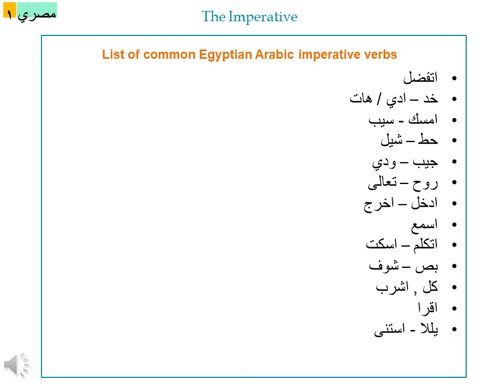Here is a list of common Egyptian Arabic imperative verbs: اتفضل means 'here you are' or 'please'; خد means 'take'; ادي means 'give'; هات also means 'give'; امسك means 'hold' or 'catch'; سيب means 'let'; حط means 'put'; شيل means 'take' or 'remove'; جيب means 'bring'; ودي means 'take away'; روح means 'go'; تعال means 'come'; ادخل means 'come in'; اخرج means 'go out'; اسمع means 'listen'; اتكلم means 'speak'; اسكت means 'keep silence'; بص and شوف both mean 'look'; كل means 'eat'.